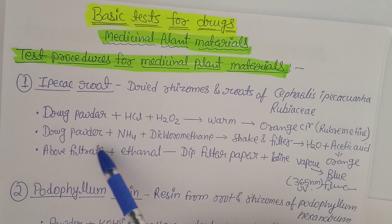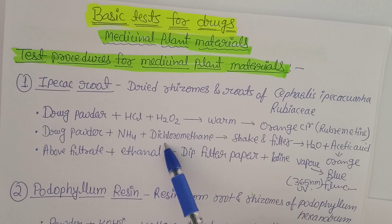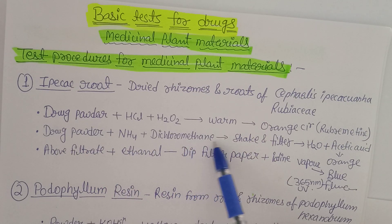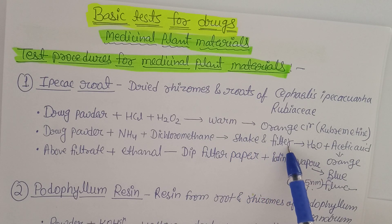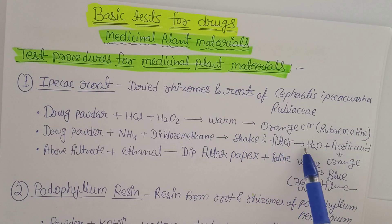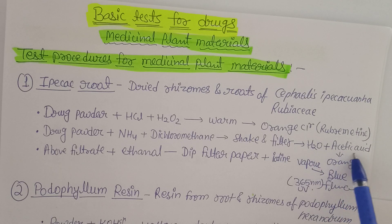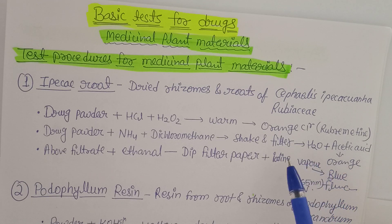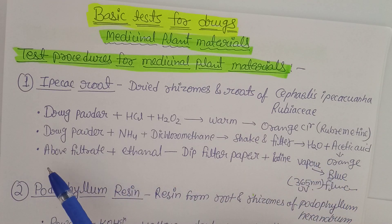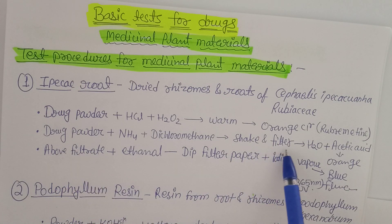Second test: take the drug powder, add ammonia, then add dichloromethane and shake. After shaking properly, filter it, then add water and acetic acid — you will again get an orange color, confirming the given sample is Ipecac root powder.